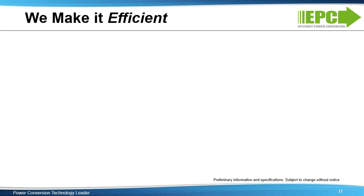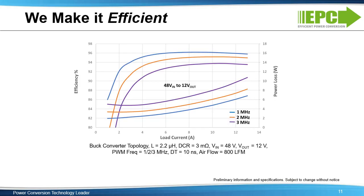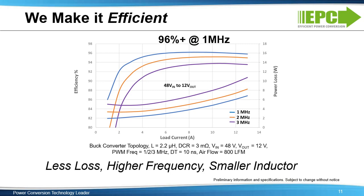We built a buck converter with an input voltage of 48 volts, an output voltage of 12 volts, and an output current of 12.5 amps to demonstrate the efficiency of the ePowerStage over a PWM frequency range from 1 to 3 megahertz. The peak efficiency is above 96% with power loss just above six watts at one megahertz. The same converter operates at three megahertz with peak efficiency hitting close to 94% at 12.5 amperes; however, the power loss at three megahertz requires a cooling solution to get lower thermal impedance. This is better than discrete eGaN FETs using the same on-resistance devices and significantly better than discrete silicon-based MOSFETs or IC solutions.